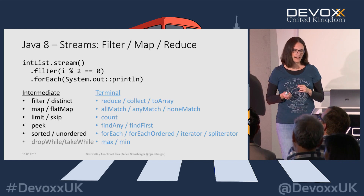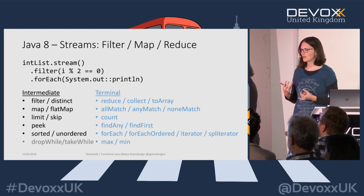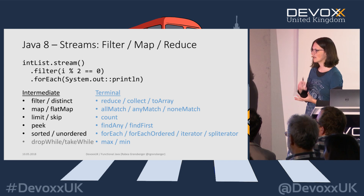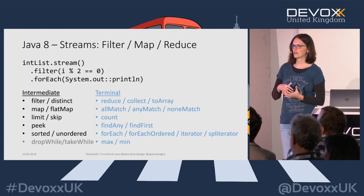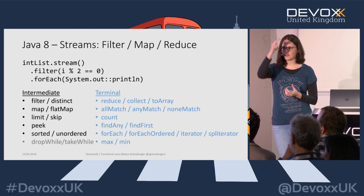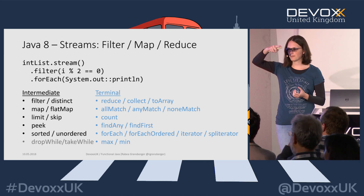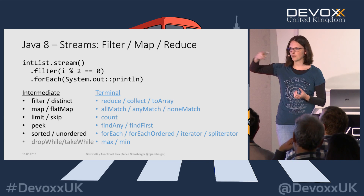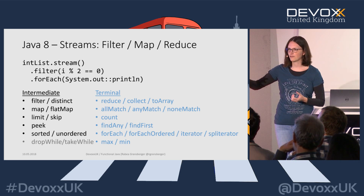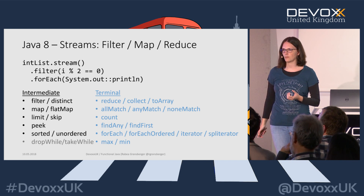Then we have terminal operations — with terminal operations you get back a final result but then you're done with the stream. The stream ends at that point, everything is pulled through the pipeline, and you have a final result and can't use the stream anymore.